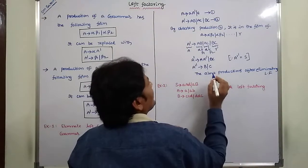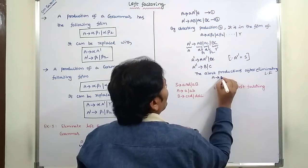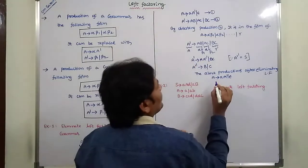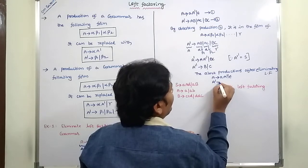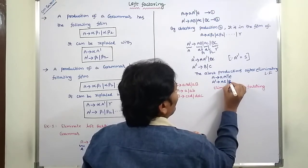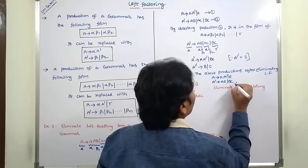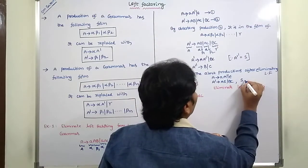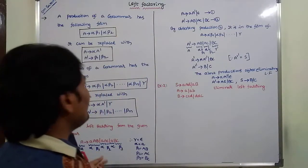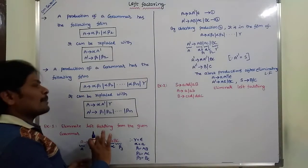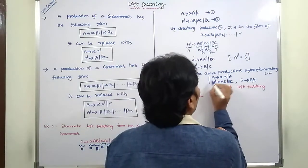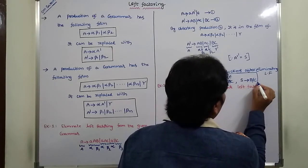After eliminating left factoring, the above productions can be written as: the first production remains the same; A-dash derives A A-double-dash | epsilon; the second production is A-double-dash derives A A-double-dash; and A-double-dash derives B | C. These are the final productions after eliminating left factoring.